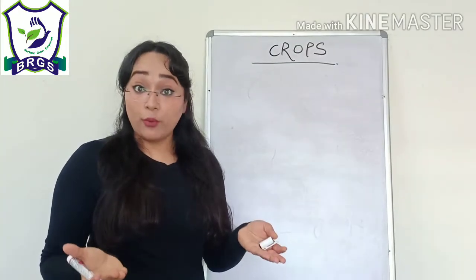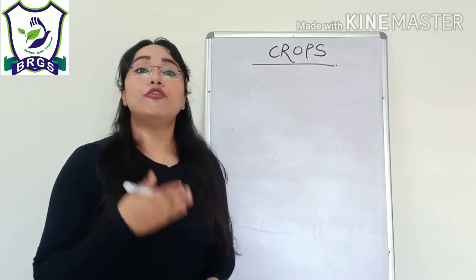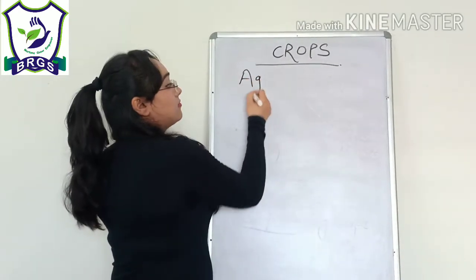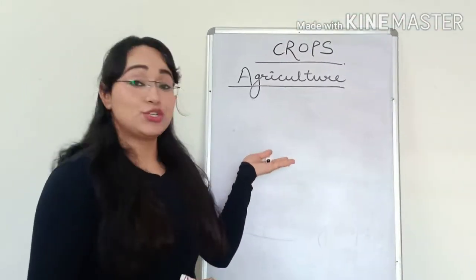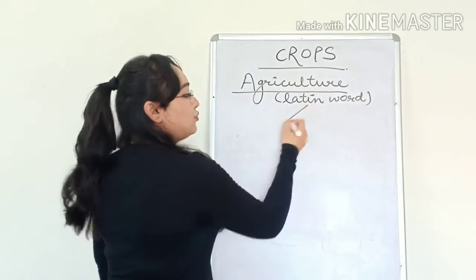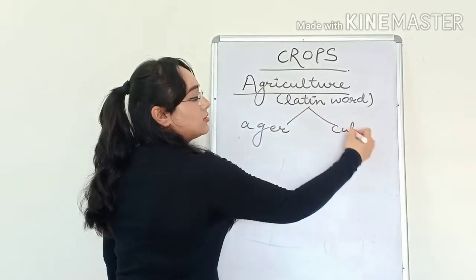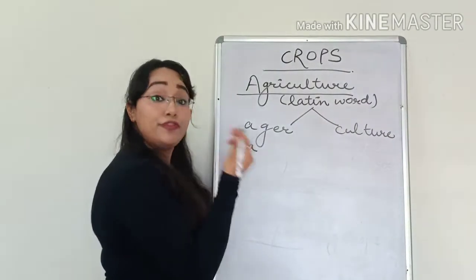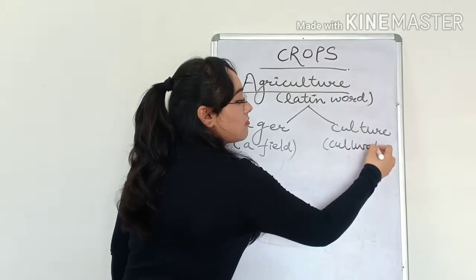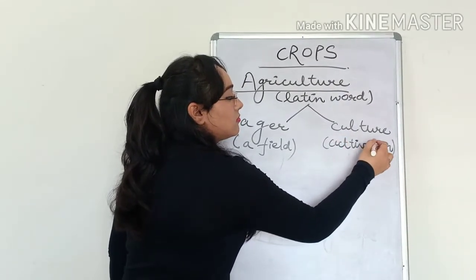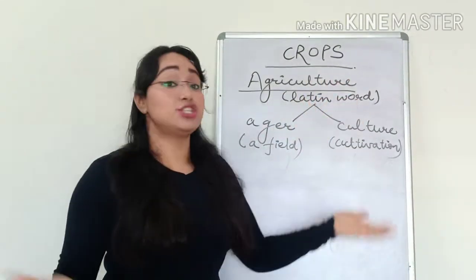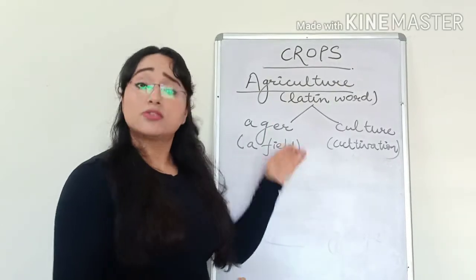Now, the practice of growing various crops in large quantities for food and for many other purposes, that practice is called agriculture. Agriculture is a Latin word. It is made up of two words, agar and culture. Agar means a field, and culture means cultivation. Together, agriculture means cultivation in a field.